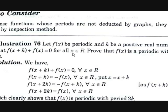We can't represent this on a graph since we don't know the function, so we solve it normally. From f(x + k) + f(x) = 0, we get f(x + k) = -f(x). Substituting x + k in place of x: f(x + 2k) = -f(x + k). Combining both: f(x + 2k) = -(-f(x)) = f(x) for all x belonging to real numbers.